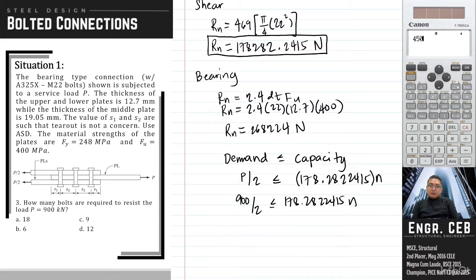Take note that we should use either the resistance factor or the factor of safety. Since it is indicated in the problem that we should use ASD, this nominal strength should be divided by the factor of safety for the bolts, and that is 2. Therefore, we can now solve for N. So we have N should be greater than 5.048. We cannot have 5.05 bolts, so we will now round this up to 6.